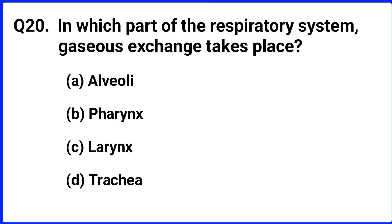Question number twenty. In which part of the respiratory system does gaseous exchange take place? The options are alveoli, pharynx, larynx, and trachea. The right answer is option A: alveoli.